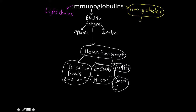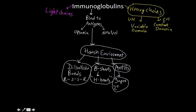For heavy chains, they have a variable domain, abbreviated as VH for variable heavy. They also have a constant domain, abbreviated CH for constant heavy. The constant domain has about three to four different types, and these three to four different types are really what define the isotype.